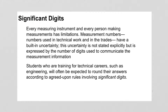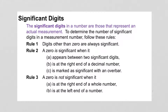Significant digits. Every measuring instrument and every person making measurements has limitations. Measurement numbers, numbers used in technical work and in the trades, have a built-in uncertainty. This uncertainty is not stated explicitly, but is expressed by the number of digits used to communicate the measurement information. Here's how you figure out the number of significant digits — they're the number of digits that represent an actual measurement.